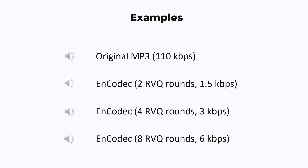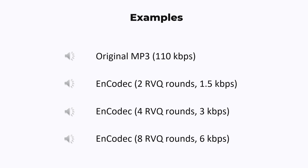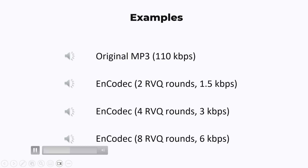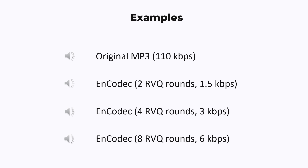Now let's actually hear what this sounds like. I've recorded a short sample of myself talking, and here's the original mp3: 'Please like this video and subscribe to my channel.' Now let's hear what it sounds like after going through the Encodec model. So I think I can definitely hear some artifacts when the bit rate is too low, like 1.5 or 3 kilobits per second. But once you get to 6 kilobits per second, it sounds pretty similar to the original mp3. So 8 rounds of quantization in this model and 6 kilobits per second is pretty good.